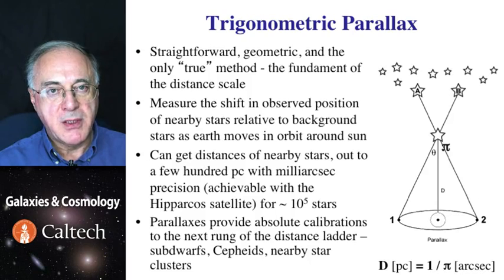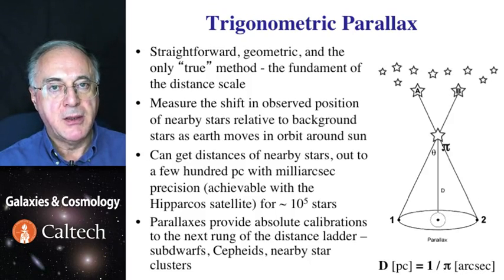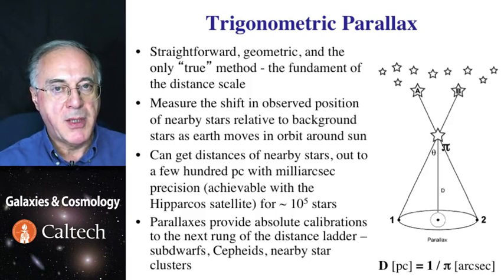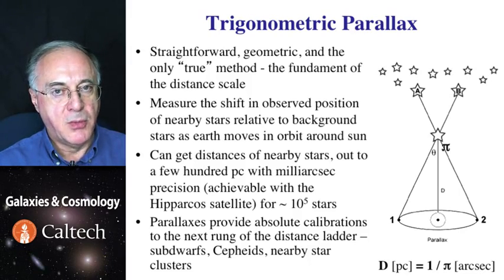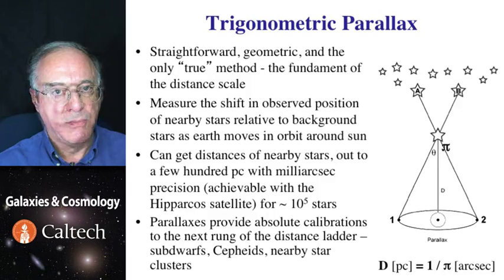The problem is that these are very small angles, and the current state of the art is that we can measure distances using parallaxes to about 1 kiloparsec out, more or less. And that's well within our own galaxy, never mind external galaxies.